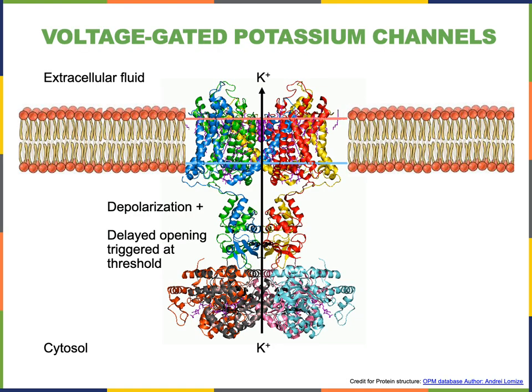Here we see the structure of the voltage-gated potassium channel. These channels are essentially the same as those seen in the neuron or in skeletal muscle, and they are responsible for repolarization during the falling phase of the action potential in the autorhythmic cell. These voltage-gated potassium channels are also found in the contractile cells of cardiac muscle.